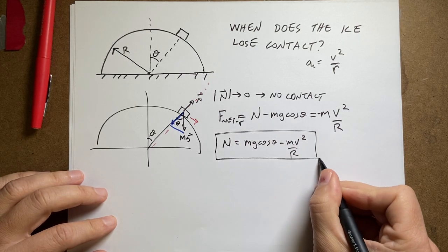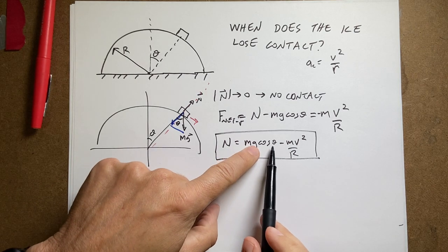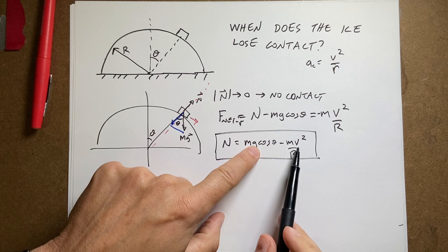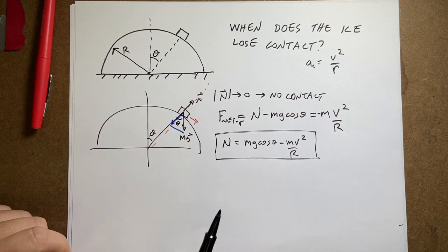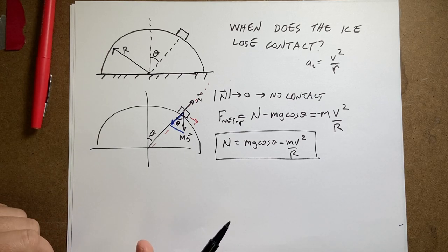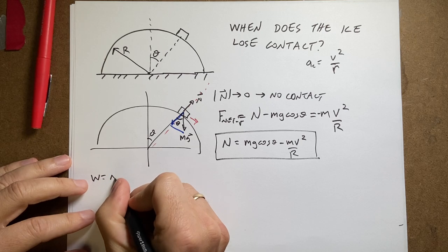And I want to find out when that equals zero. But I have a problem in that, yes, theta changes. I want to find that angle. But v changes too, right? The velocity changes as this moves down. So how do I find the velocity? Now we're going to switch directions here. We're going to use the work energy principle. Zero work change in energy.